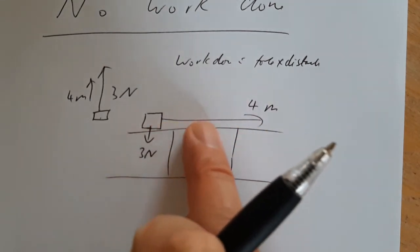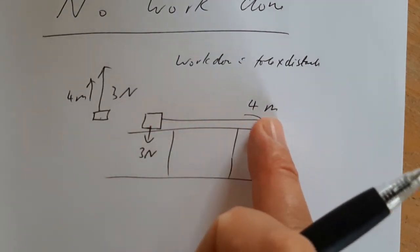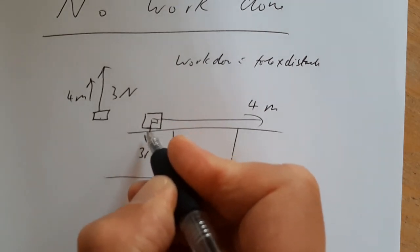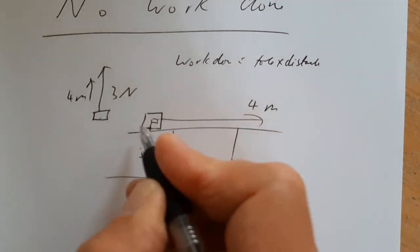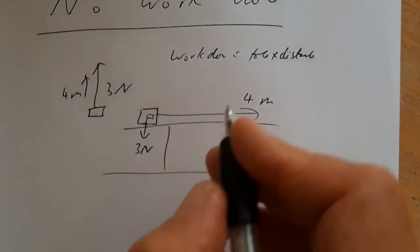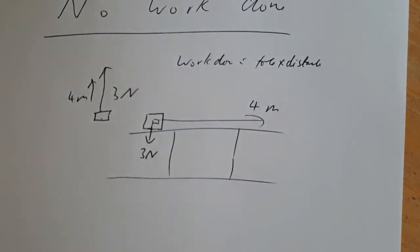So if we can slide an object with no friction, maybe it's like on an air hockey table from one place to another with no friction, you can see that the weight, the force, is at right angles to the displacement. You know, how it's moved sideways and therefore the work done is zero.